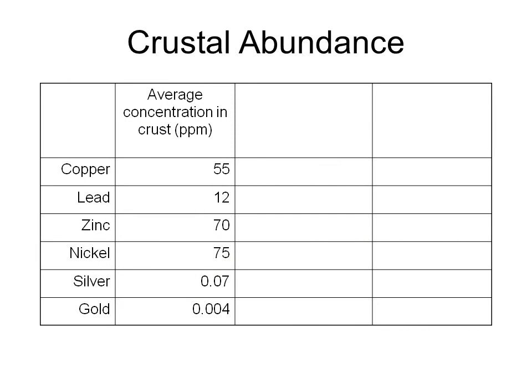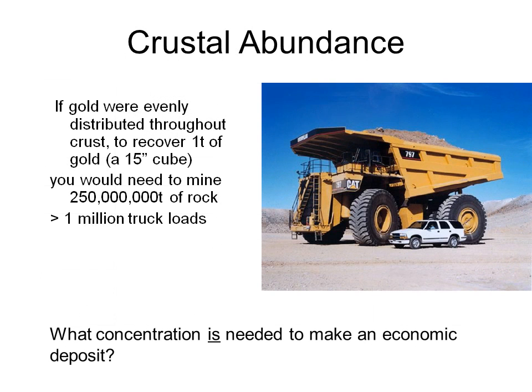This table summarizes the average crustal abundance of some of the most widely used metals. Figures are expressed in parts per million. So if the crust were homogeneous, each metric ton of crustal material would contain just 55 grams — or less than 2 ounces — of copper, 12 grams of lead, and a pinhead-sized piece of gold. To recover a 15-inch cube of gold, you would need more than 1 million truckloads of typical crustal rock — and I'm talking about big trucks like the one in the picture. Obviously, average crustal abundance is not going to cut it for an economic deposit.